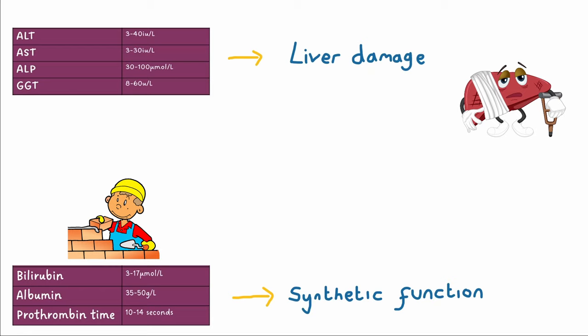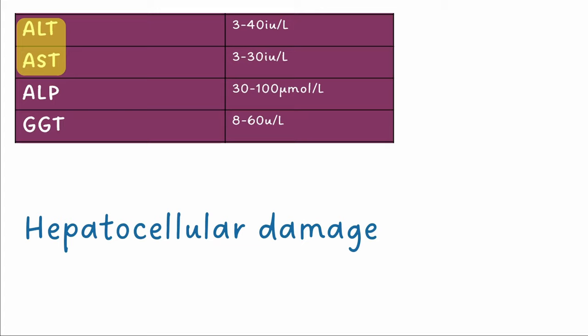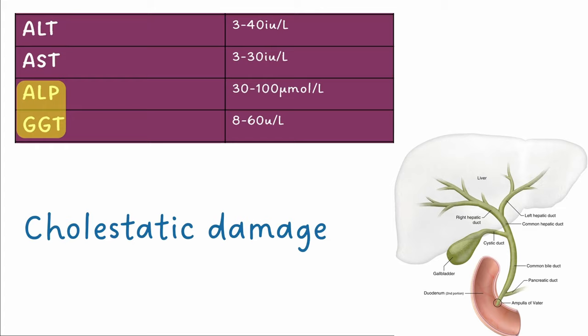Firstly, let's look at the markers of liver damage. ALT and AST are often raised when the liver cells, or hepatocytes, are being damaged by a disease process. Whereas ALP and GGT will be raised when there is a problem with the flow of bile, which carries bilirubin from the liver to the small intestines. This is known as cholestatic damage.